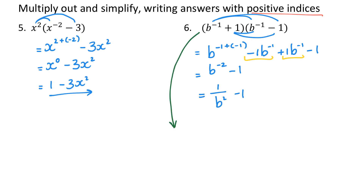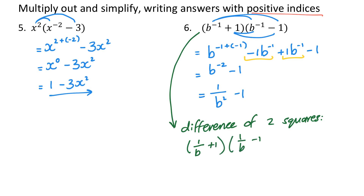Now some of you, if you know factorizing well, you might have spotted the difference of two squares. If I write my brackets in a different format, you might also spot the difference of two squares — I've got the same first value and the same last value in the brackets except with opposite signs. So that gives me 1 out of b squared minus 1. That brings me to the end of this video. Be careful when you're applying the laws of exponents if you've got adding or subtracting, and I suggest simplifying inside brackets first before you use that bracket to do something else.